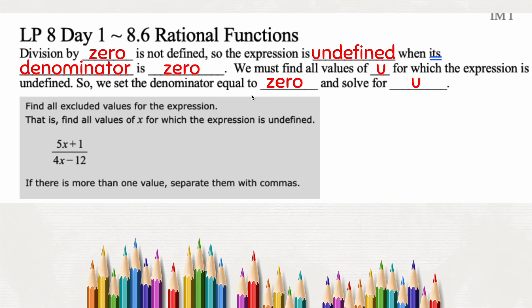If we order a pizza for the classroom and it shows up with zero pieces in the box, but at the end of class there are five pieces — that doesn't make sense. There was zero to start with; how did we get five magic pieces of pizza? That's the idea of zero in the denominator, because the denominator tells us how many pieces we have for a whole. If I have zero, I can't suddenly have five pieces of nothing. But if the pizza showed up with five pieces and at the end of class there were zero, we probably just ate them — that's zero over five. So you can't have something from nothing.